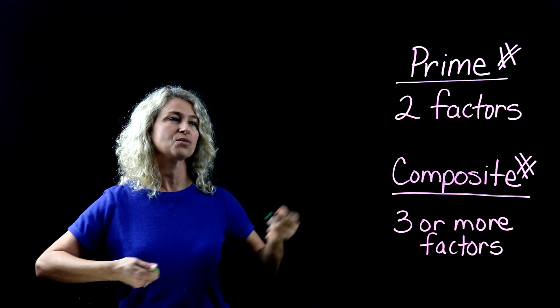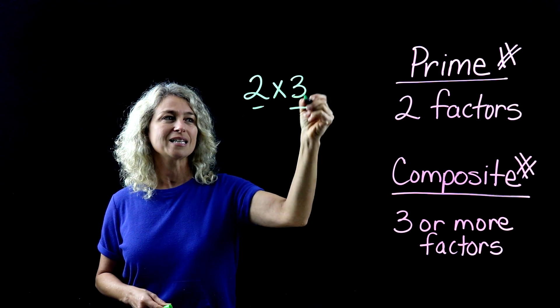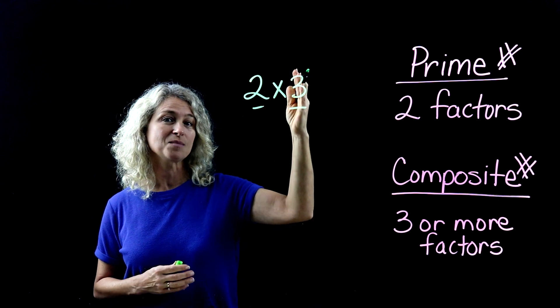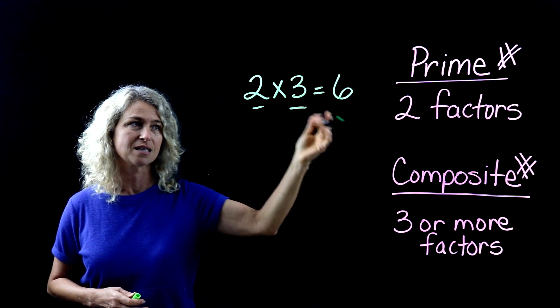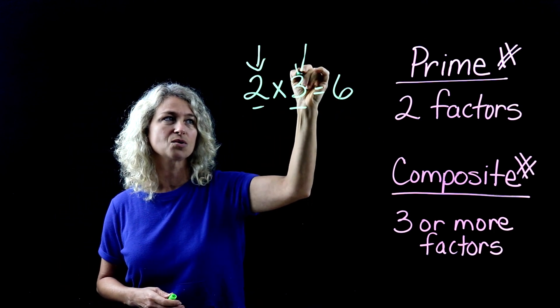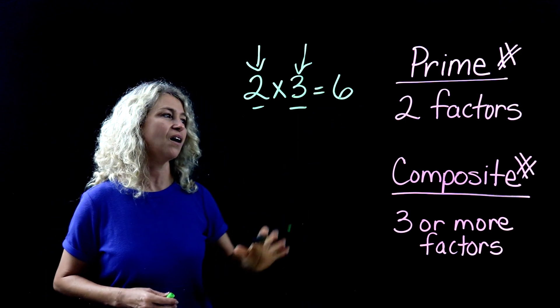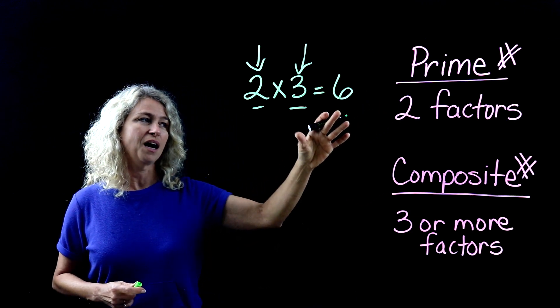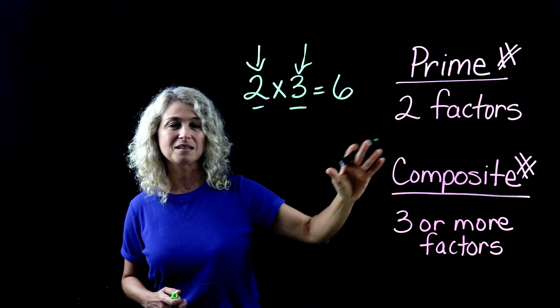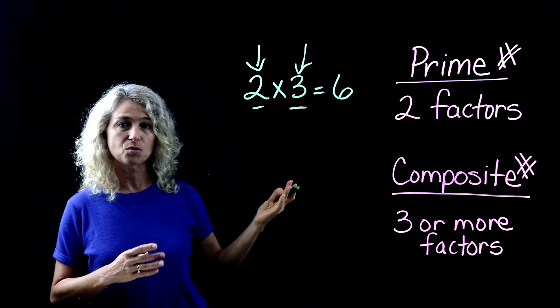A factor is a number that is multiplied times another factor to get to a product such as six. These two numbers are the factors of six. Alright, so let's determine whether or not some particular numbers are indeed prime numbers or not.